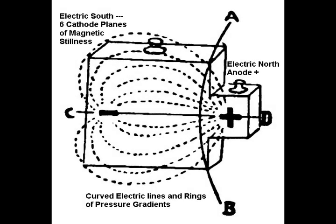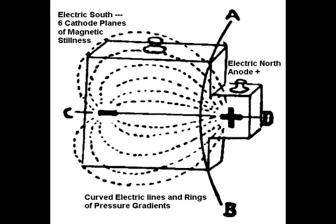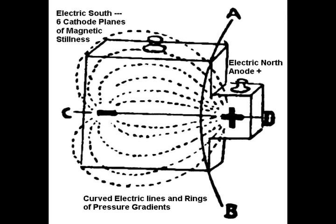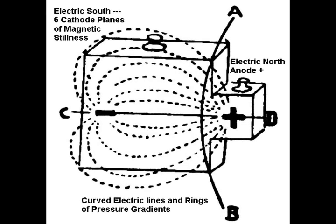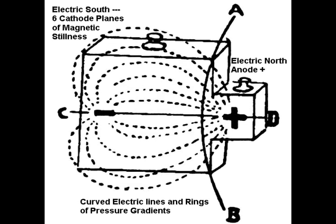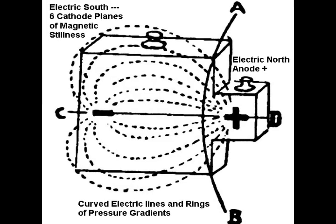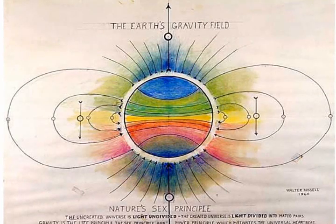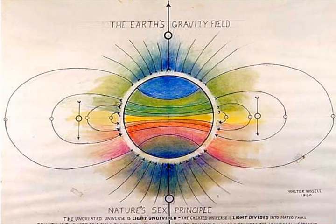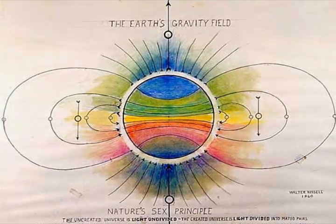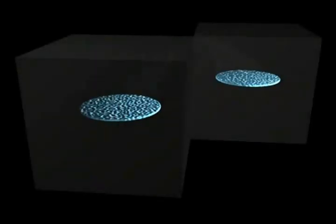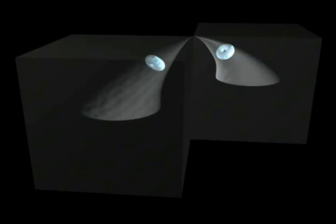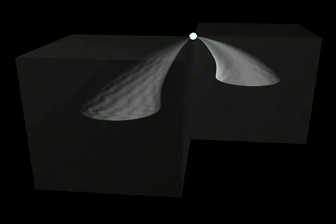The positive sign represents the electric north of all wave fields and the negative sign represents the six cathode faces of the cube, which are the south direction of motions from the center. These curved electrical pressure gradients have been falsely defined by academia as magnetic fields and are in reality gravity-controlled rings of spiraling electricity. Magnetism is cathode planes of stillness, not a force.